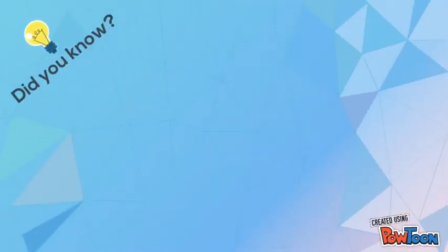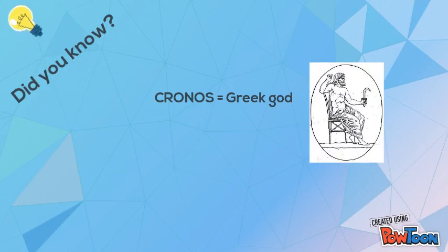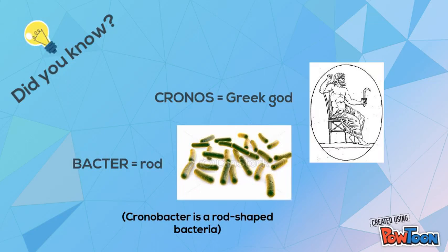Chronobacter is named after the Greek god Kronos who swallowed each of his children as soon as they were born, and the new Latin masculine word bacter means a rod. Thus, in general, Chronobacter means a rod that can cause illness in neonates.